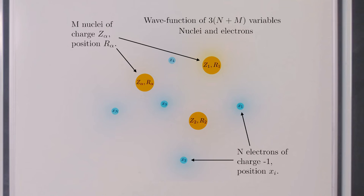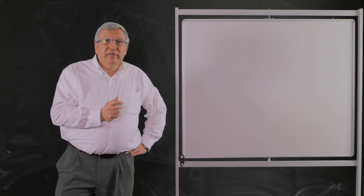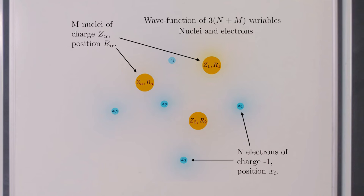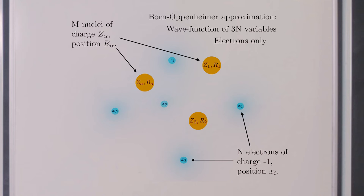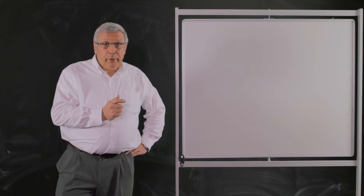This is why it is classical to make an assumption using this difference of time scales. First, we focus on the movement of the electrons, and then we can consider the movement of the nuclei. These nuclei can be considered as classical particles or as quantum particles, but the electrons must be considered as quantum particles. This approximation is known as the Born-Oppenheimer approximation and is used for discretization and solution. It allows us to replace the wave function of 3N + M variables with a wave function associated to only the N electrons. Note that the Born-Oppenheimer approximation leads to errors that can be measured and corrected.